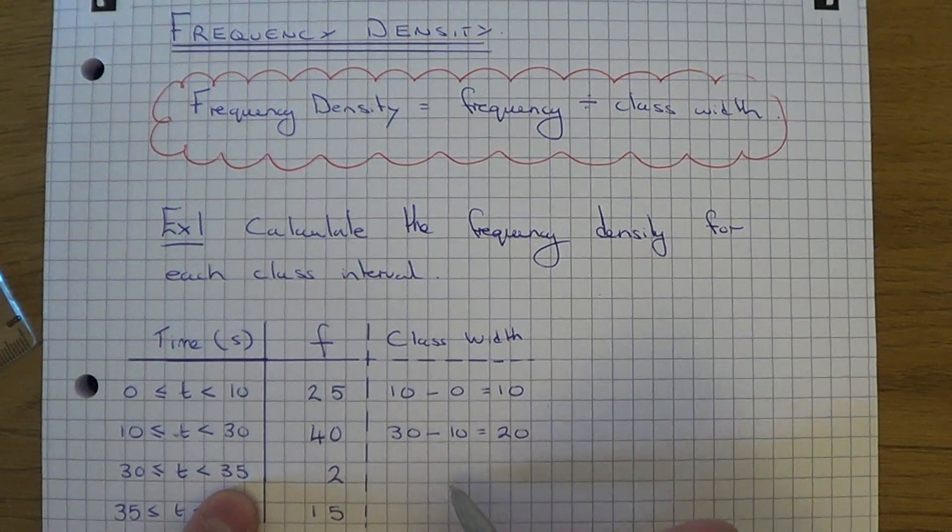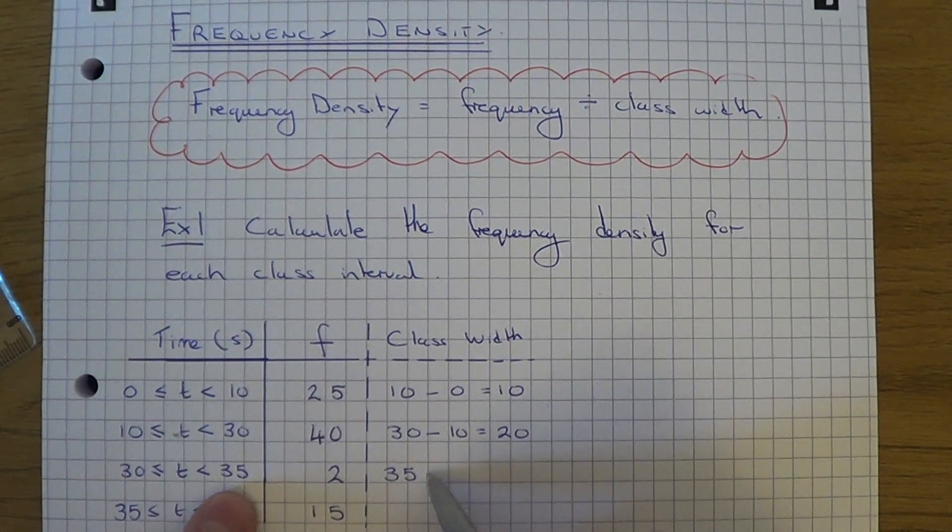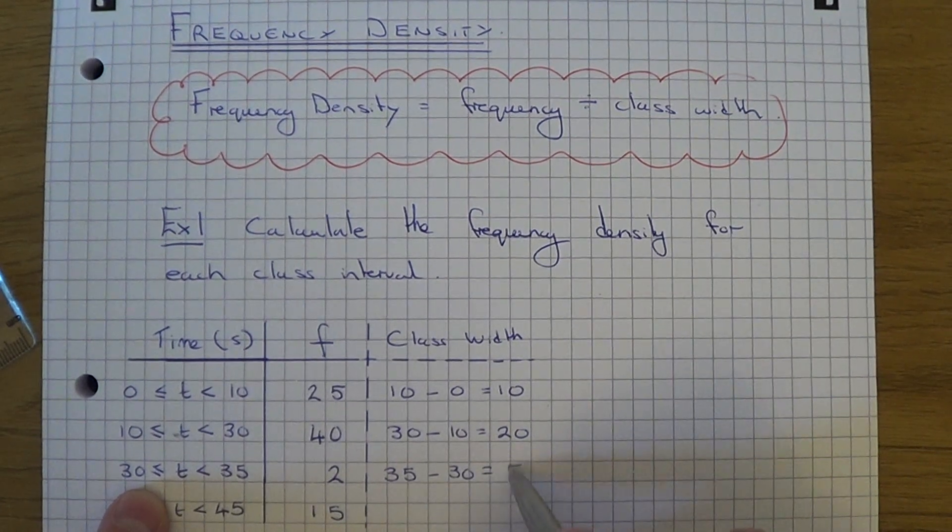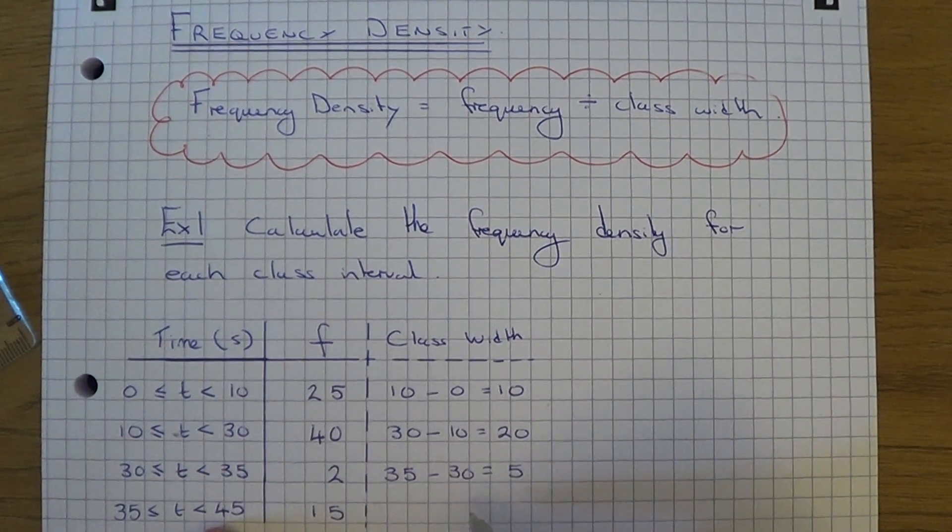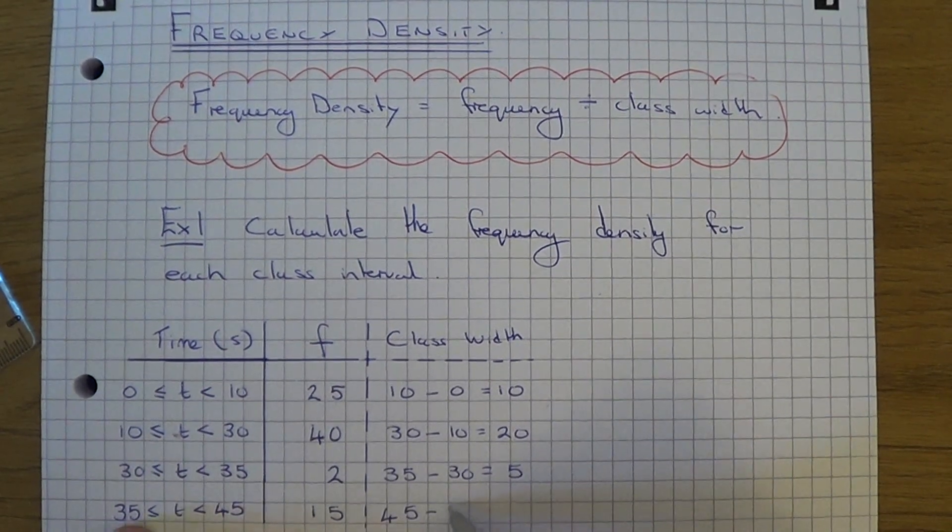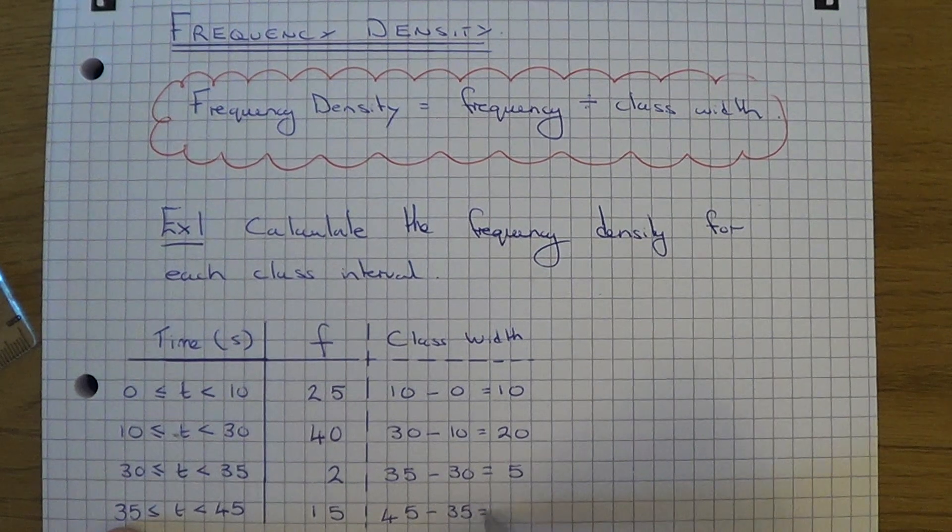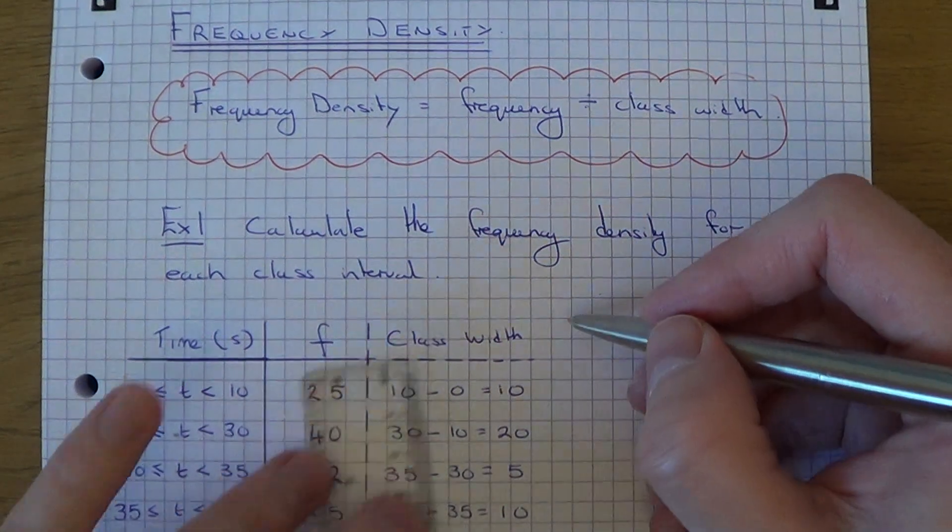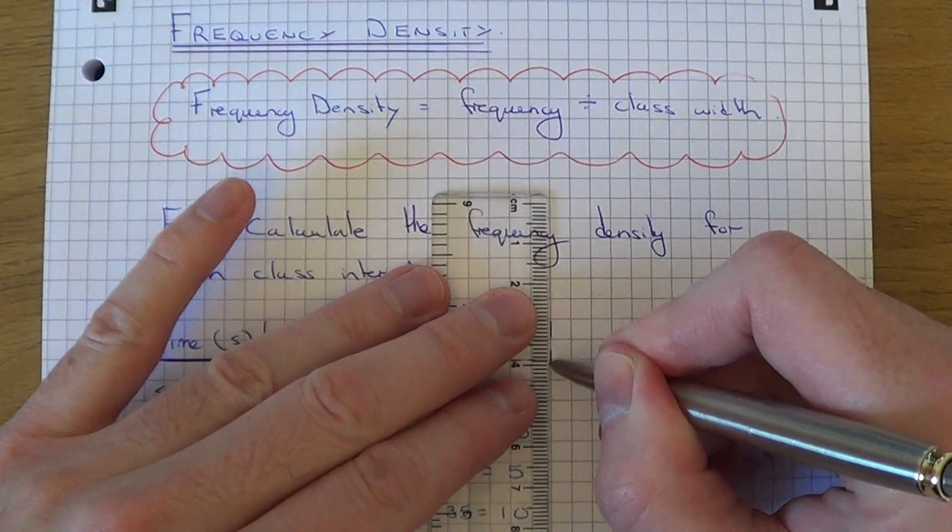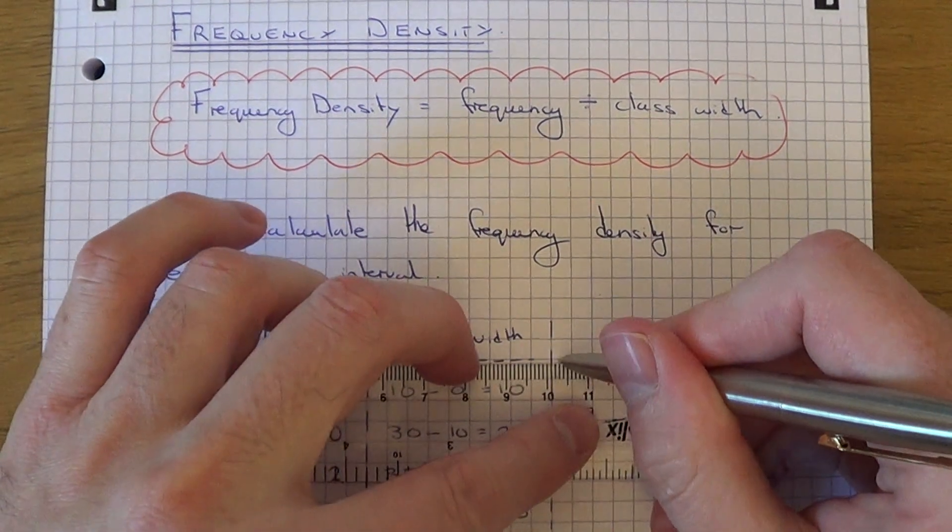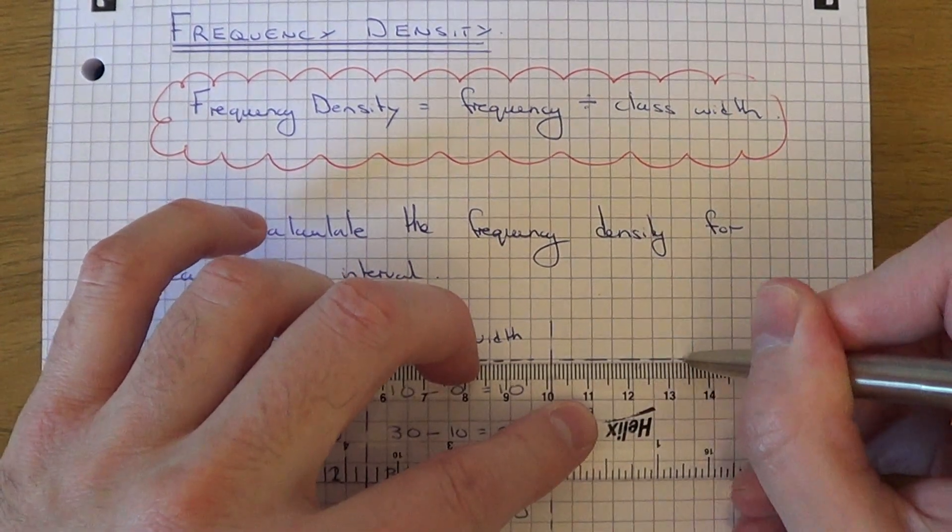For the third group, the class width would be 35 take away 30, which is 5. And for the fourth group, that will be 45 take away 35, which is 10. Once you've done this, let's add another column on, and this time we can calculate our frequency densities.